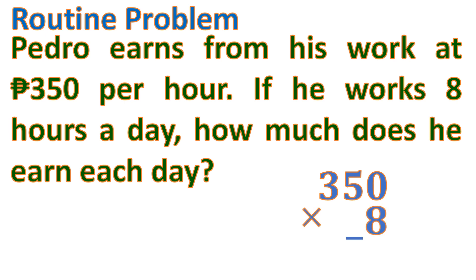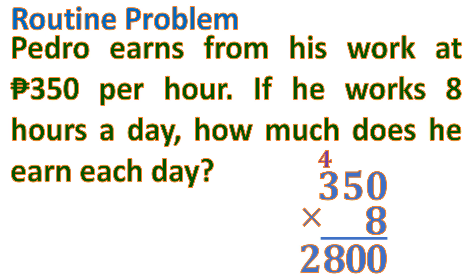Let's multiply: 0 times 8 is 0. 5 times 8 is 40 — put 0 and carry 4. 3 times 8 is 24, plus 4 is 28. So it is 2,800. Since our unit is peso, we put the peso sign. So it's 2,800 pesos.